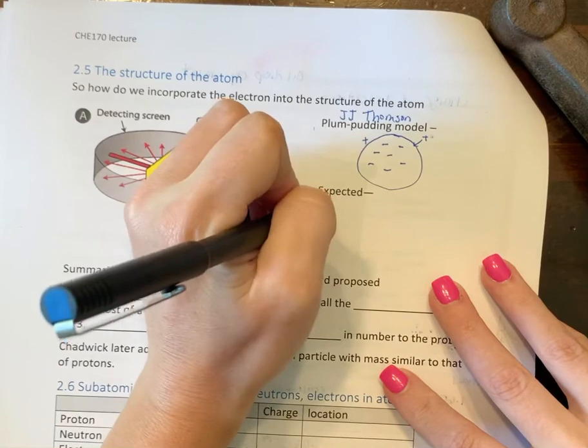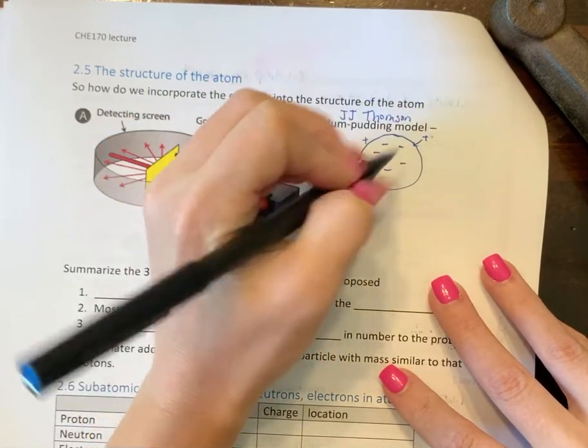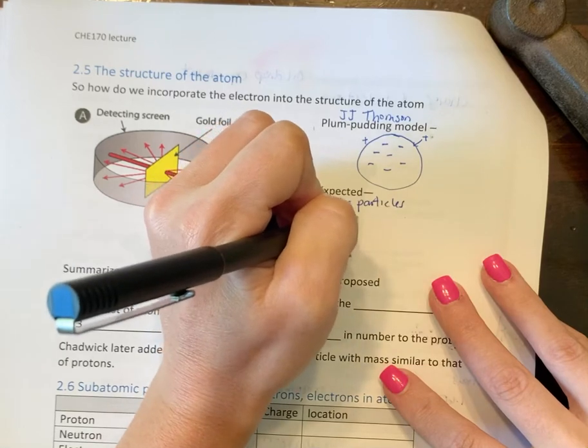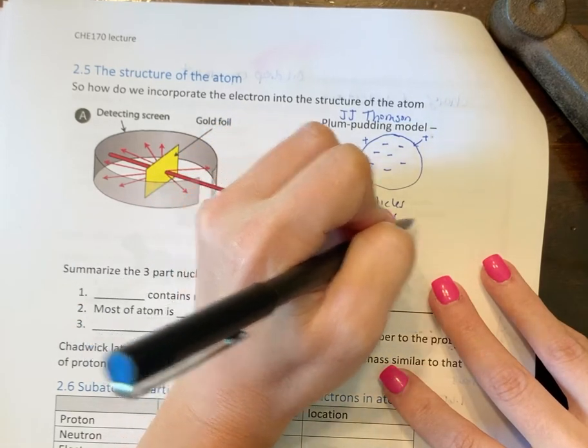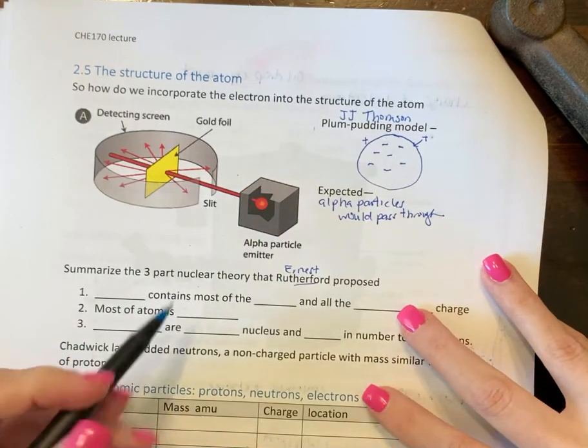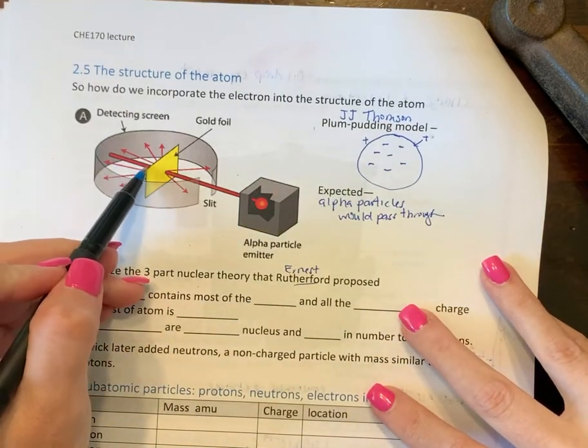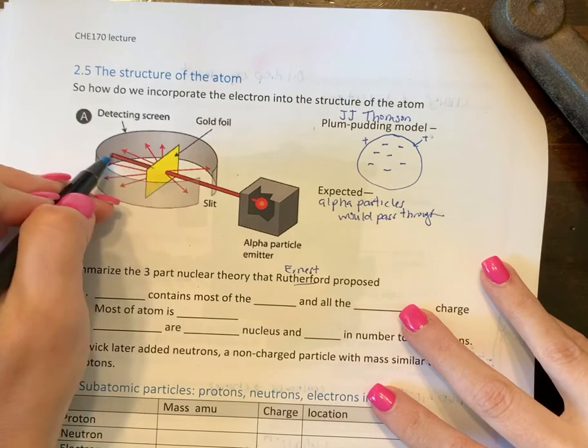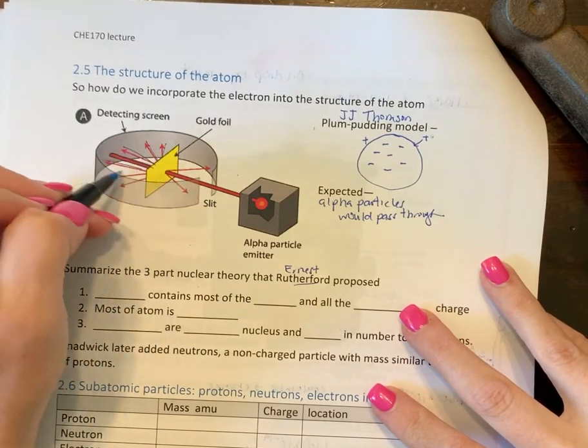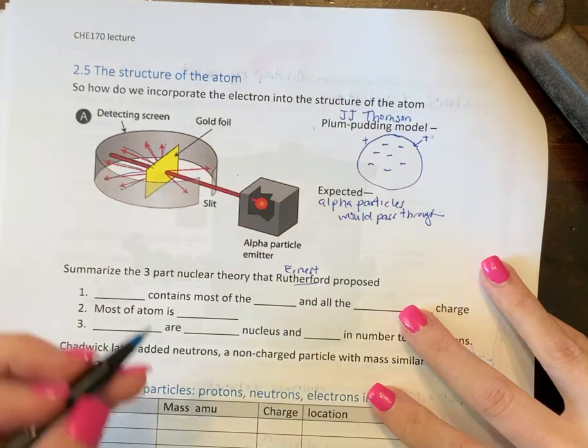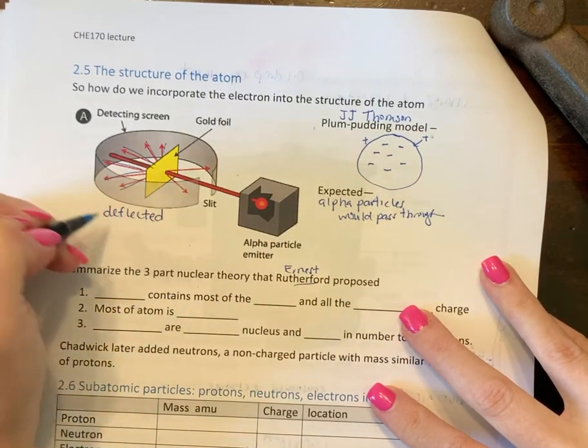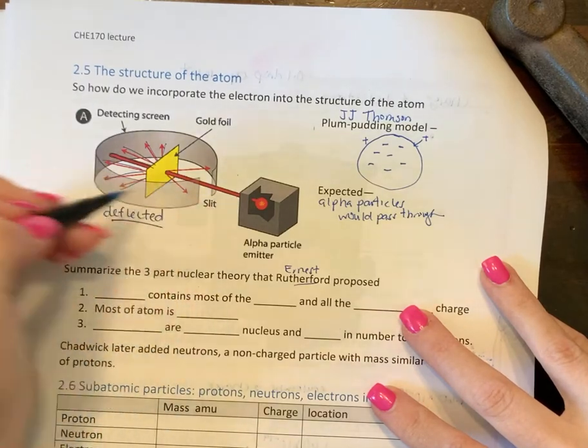So all the alpha particles, you have to know what an alpha particle is. All the alpha particles would pass through. And so that's what the majority of them did, they all went, most of them went straight through. However, a few of them went and got deflected. Well, that would not happen. And some of them even came straight back at him.